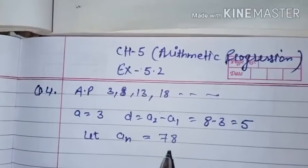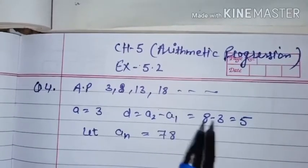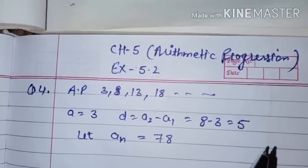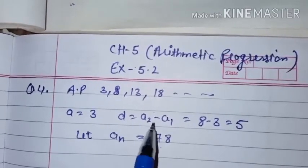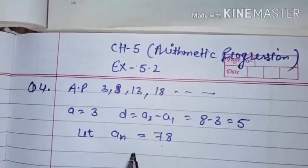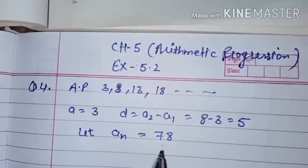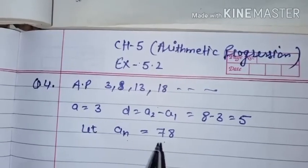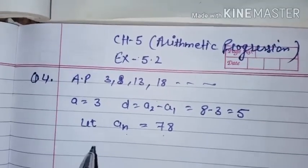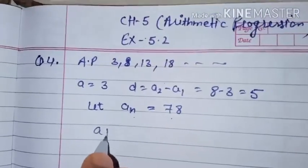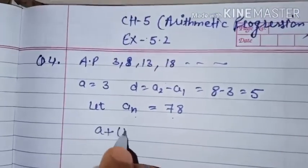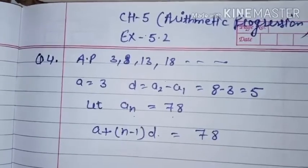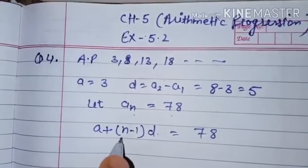We suppose that 78 is the last number of this AP and represent it as AN. Now we know the formula: AN equals A plus (n minus 1) into D, which equals 78. It means we have to find n.